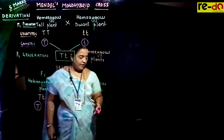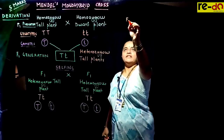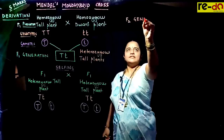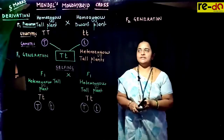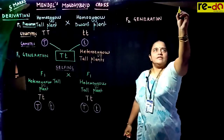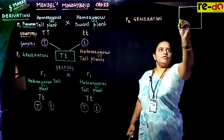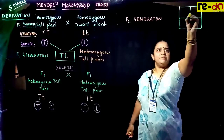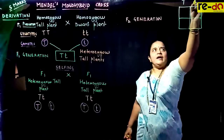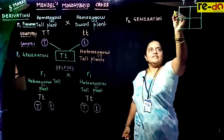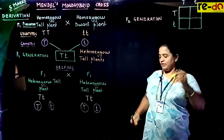We use a checker's board — also known as the Punnett square — to show the F2 generation results. Punnett is the name of the person who gave this method. On one side we write female gametes horizontally, and vertically arranged are the male gametes.